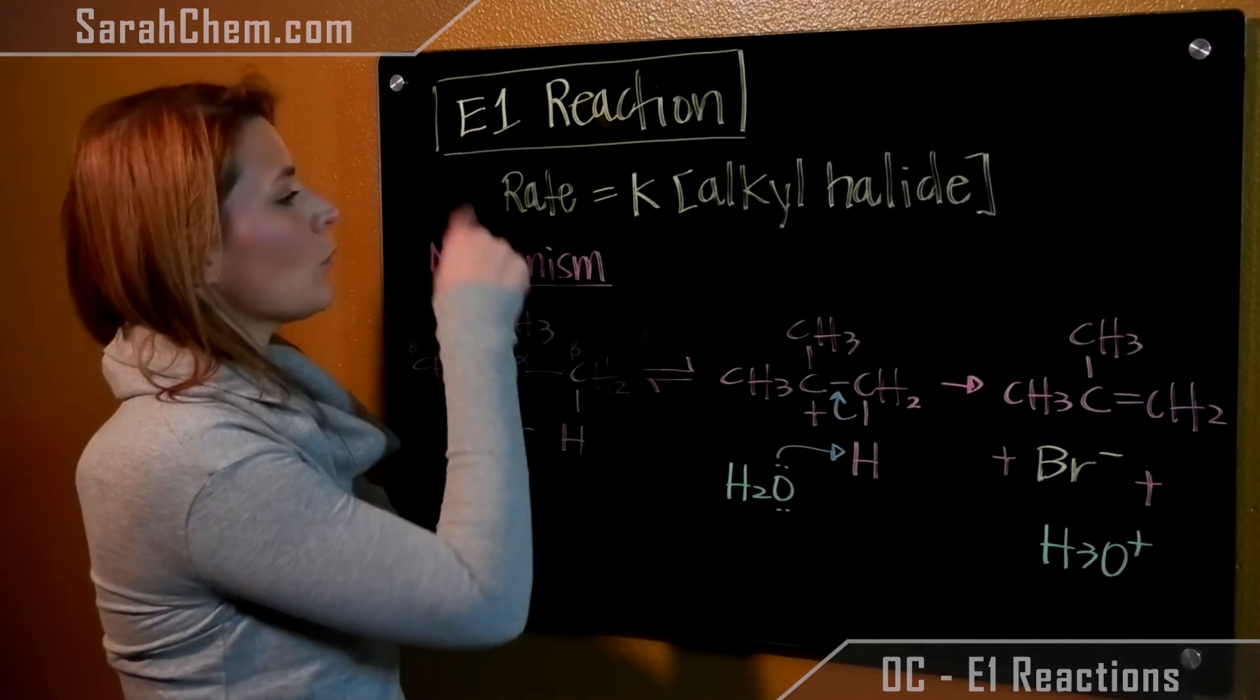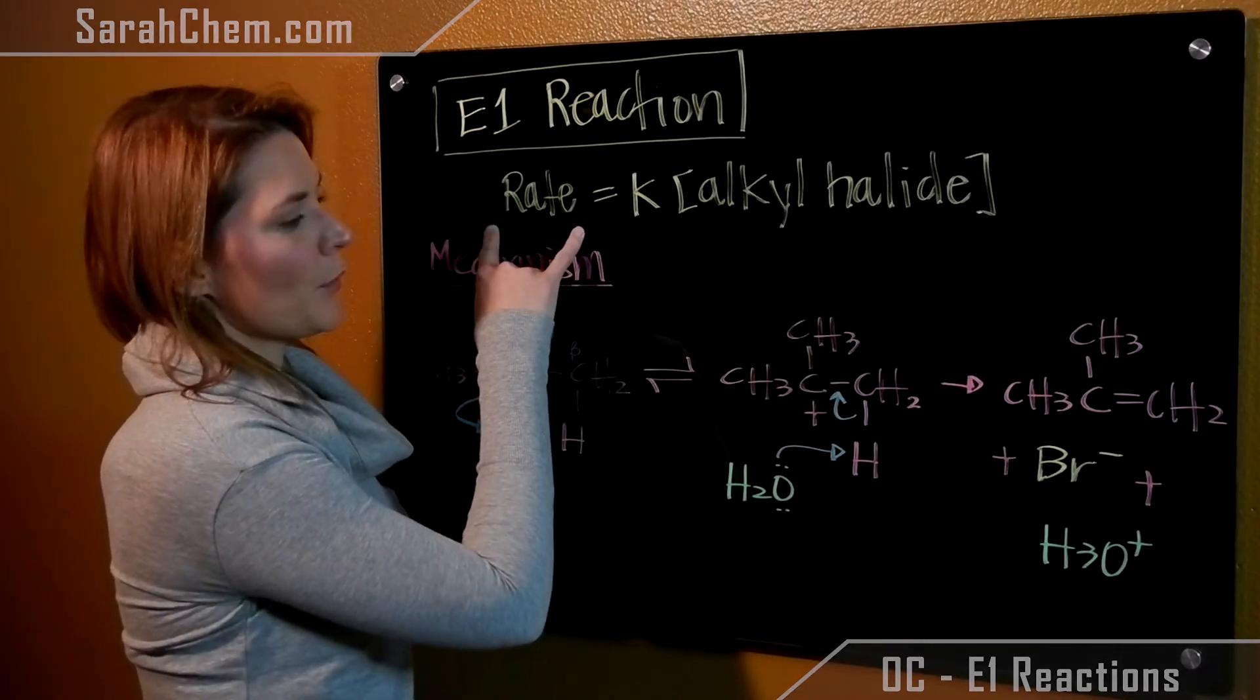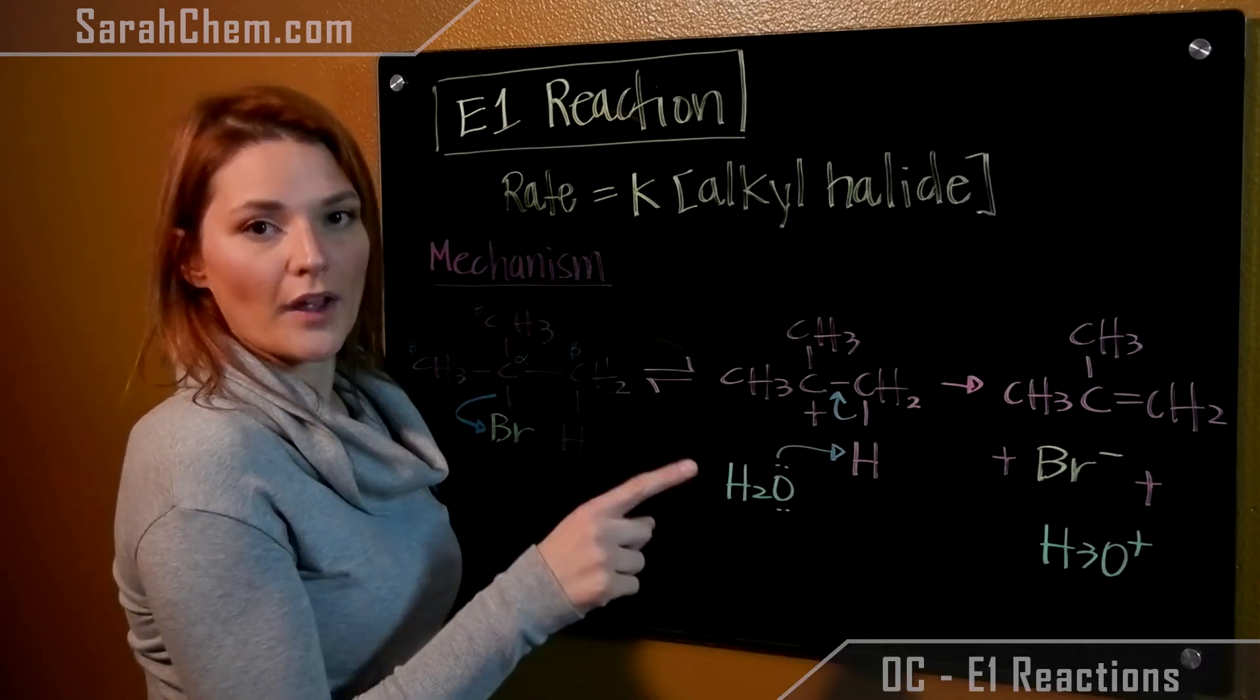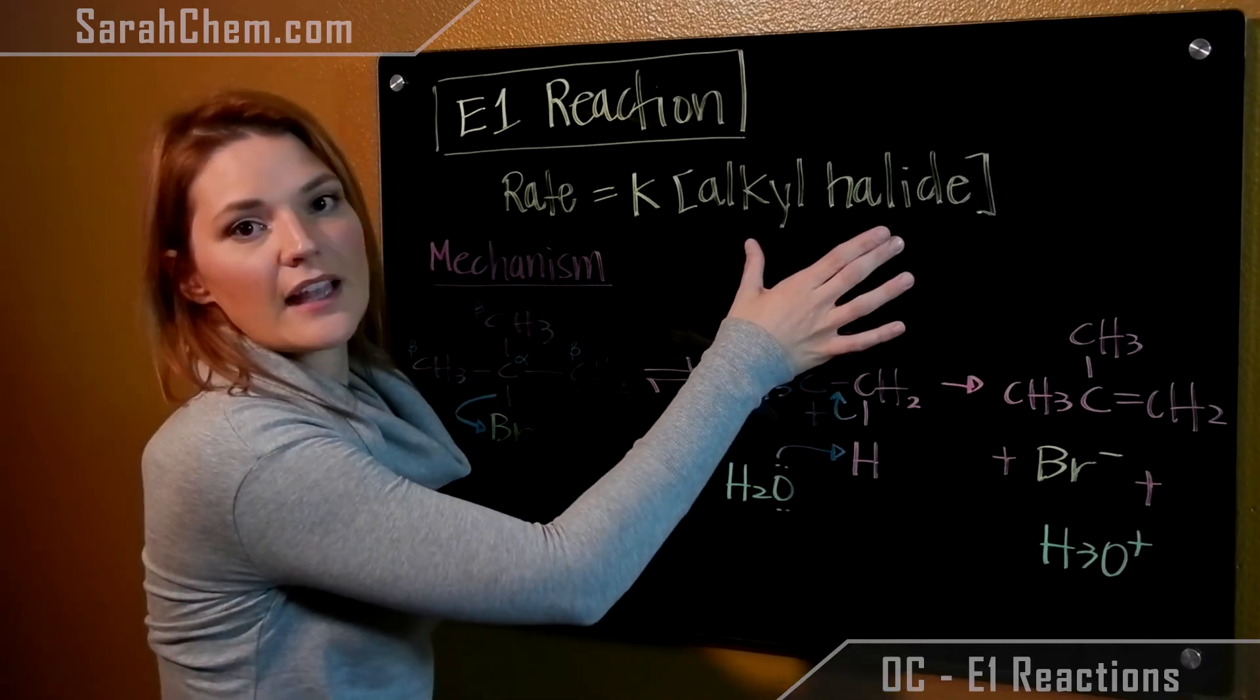The reason it's called an E1 reaction is because if you look at the rate law, it's unimolecular, which means it only depends on one reactant, in this case just the alkyl halide.